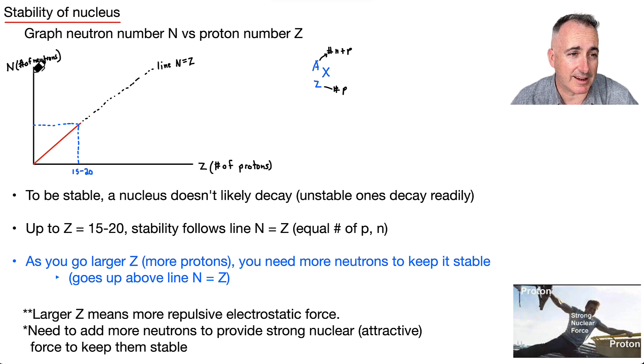So we've got N and Z. If a nucleus is going to be stable, it means it doesn't really want to decay. Unstable ones will decay on their own, that means they don't last very long. And it turns out from the start up until around 15 to 20, stability follows this line of N equals Z. In other words, this red line follows this: you go over one, you go up one. For every one proton you add, you add one neutron and everything's fine. What's interesting is as you go larger, so maybe you go to more and more protons, think about it, those protons are all these things that are helping to rip apart the nucleus.